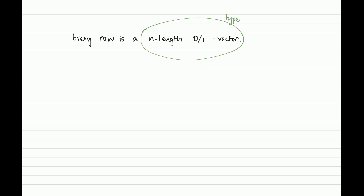We only need to track voters of the same type in terms of numbers rather than specific identities. The number of types is 2^m — since every type is simply a subset of m issues — though the number of types actually realized in the input may be smaller. We can leverage this notion of types to come up with a small set of variables, where small means a number that is just a function of the number of issues.